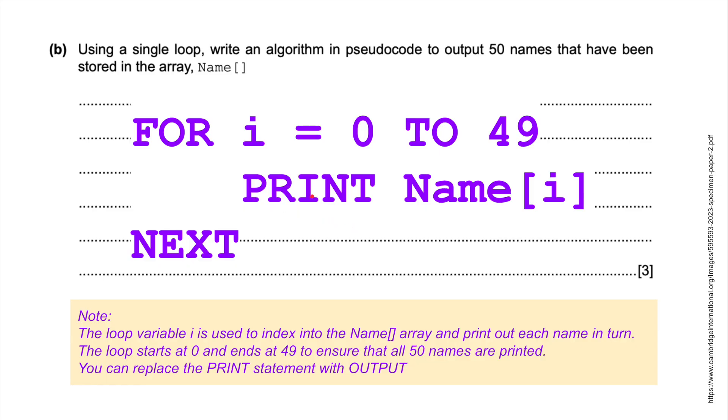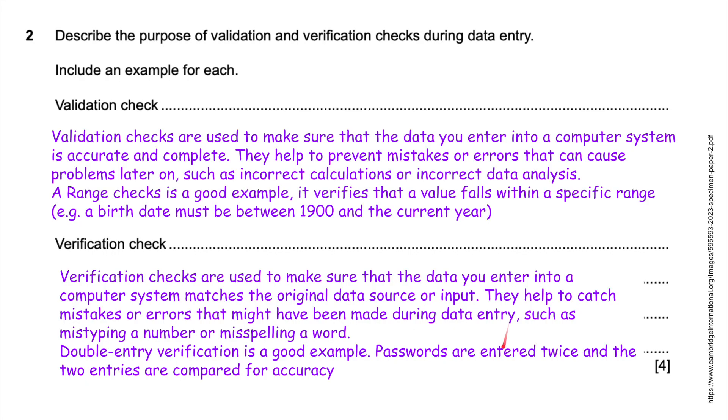You can replace the print statement with output if you want. Depending on which book you're reading, you could use print or output. Now then, I've got a bit overboard with this because it's only two marks, but I've tried to give an example. Validation checks are used to make sure that the data you enter is accurate and complete. They help to prevent mistakes or errors. A range check is a good example. It verifies that a value falls within a specific range, e.g. a date of birth must be between 1900 and the current year. Verification checks make sure the data matches the original data source. Double entry verification is a good example. Passwords are entered twice and compared for accuracy.